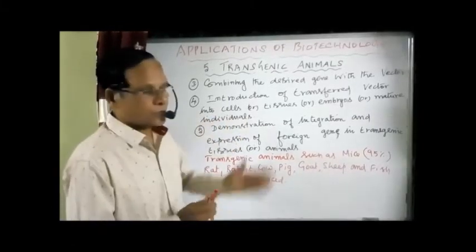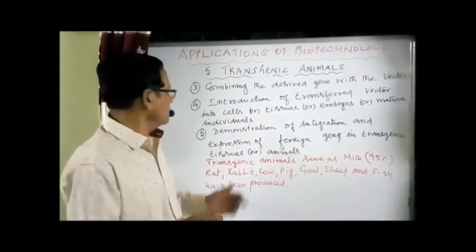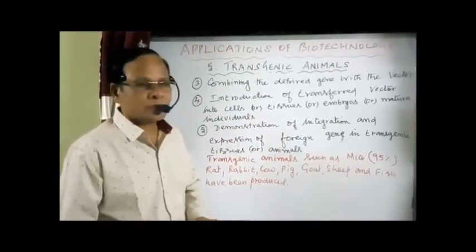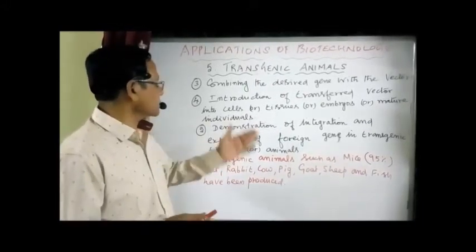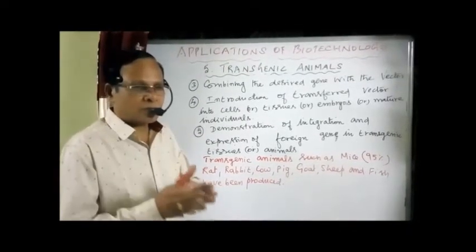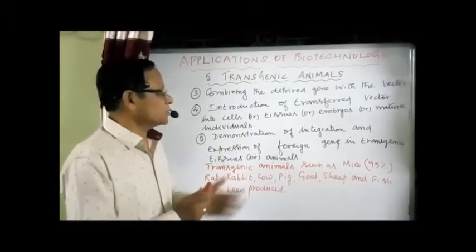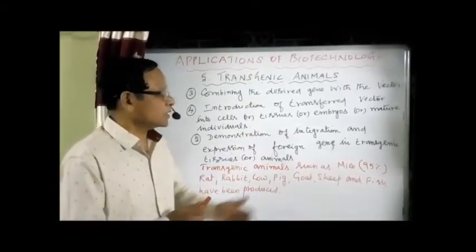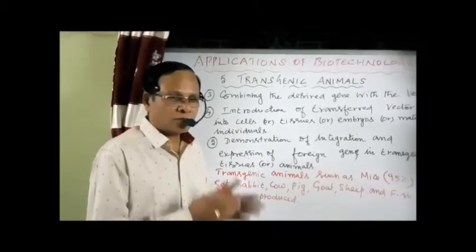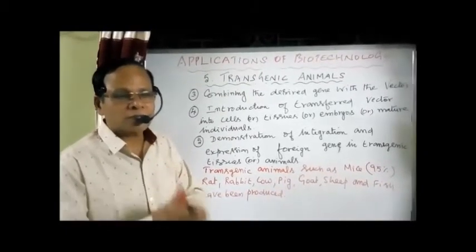After combining, we have to introduce the vector carrying the gene — introduction of the transferred vector into cells: either single cells like the egg cell, into tissues, embryos, or in the case of mature animals. Then we have to demonstrate the integration and expression of the gene, so that the foreign gene integrates with the host cell and expresses itself to produce the desired protein or product.